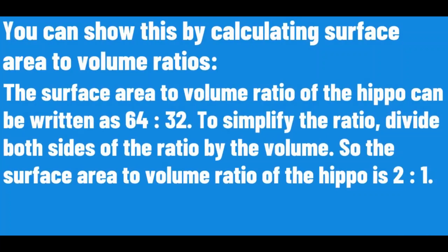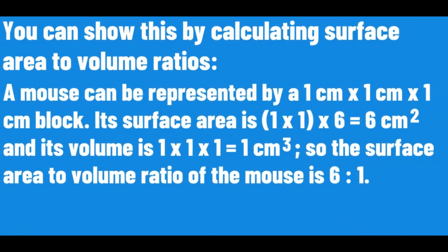To simplify the ratio, divide both sides of the ratio by the volume, so the surface area to volume ratio of the HEPA is 2 to 1. A mouse can be represented by a block. Its surface area is 6 cm² and its volume is 1 cm³, so the surface area to volume ratio of the mouse is 6 to 1.